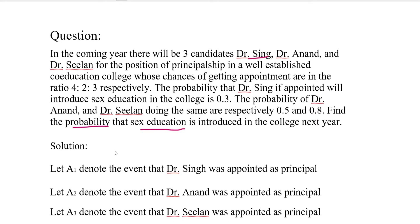For our convenience, let A1 denote the event that Dr. Singh was appointed as principal. A2 denote the event that Dr. Anand was appointed as principal. And A3 denote the event that Dr. Seelan was appointed as principal. These are the three events A1, A2, and A3.